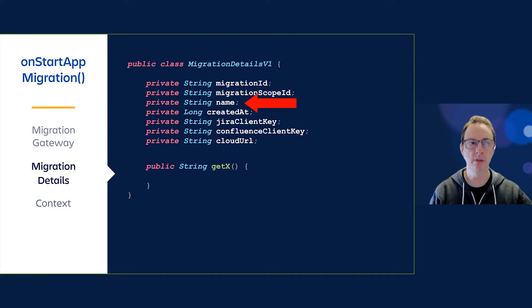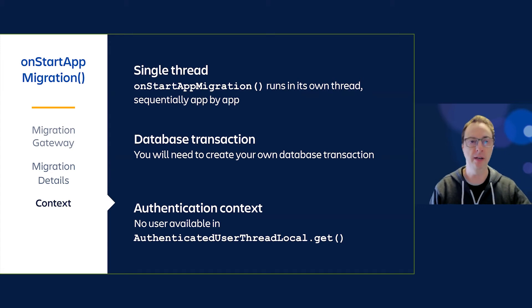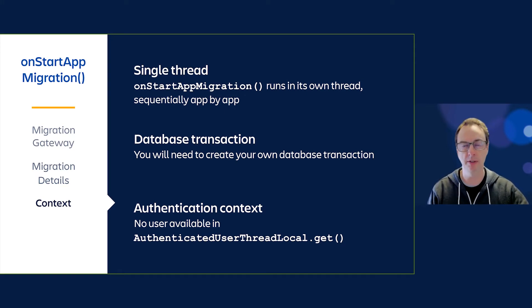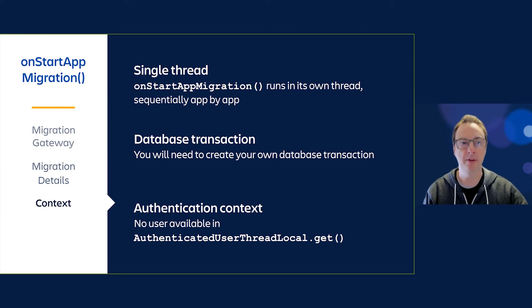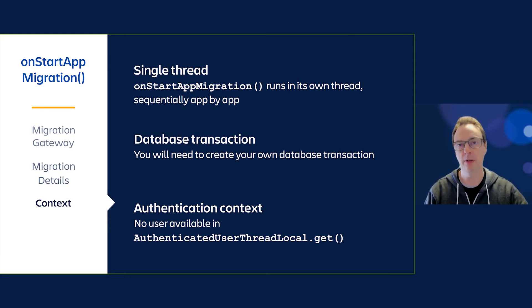It's important to understand that onStartAppMigration runs in a single thread, so you don't need to start your own threads or handle your own multitasking — each onStartAppMigration is called sequentially. It's not within a database transaction, so you need to create your own. If you're accessing AO tables, use the AO table code for transactions. If you're accessing a service within Confluence or Jira that needs a database transaction, you need to be responsible for creating that yourself.